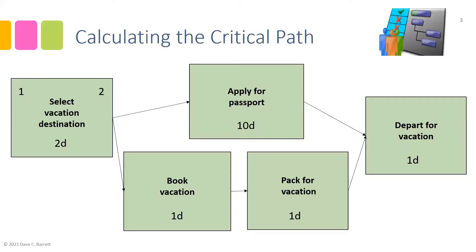We follow the dependencies — the successors to 'Select Vacation Destination' are 'Apply for Passport' and 'Book Vacation.' To calculate the Early Start of succeeding activities, you add one to the Early Finish of the predecessor, which results in an Early Start of day three for each of those activities. For each activity, we take the Early Start, add the duration, minus one — giving an Early Finish of day 12 for 'Apply for Passport' and day three for 'Book Vacation.'